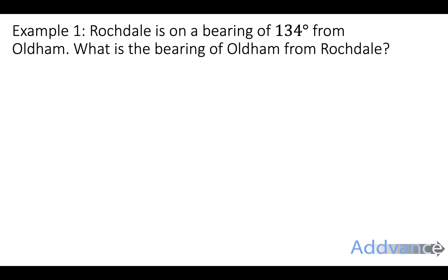Now it says, example 1: Rochdale is on a bearing of 134 degrees from Oldham. What is the bearing of Oldham from Rochdale? So we draw Oldham with a north line, and then we sketch a 134 degree angle. This doesn't have to be perfect; you're not using a protractor here. It's just a quick sketch of an obtuse angle, and Rochdale is going to be in this direction somewhere over here.